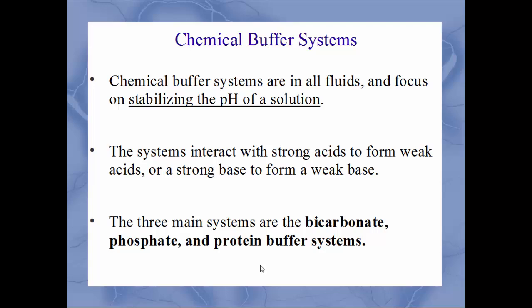The chemical buffer system is found within all body fluids and functions to stabilize the pH of solutions by converting a strong acid into a weak acid, or a strong base into a weak base. There are three types: the bicarbonate, phosphate, and protein buffer systems. Bicarbonate was already discussed in the context of the digestive system — bicarbonate ions released into the small intestine neutralize the strong acid of chyme coming from the stomach, turning a very strong acid into a weak acid the intestines can tolerate.